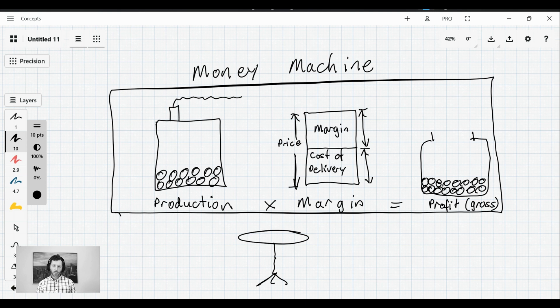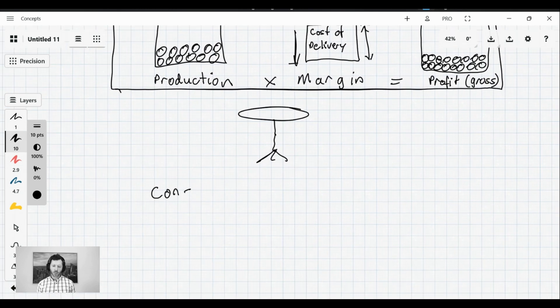Okay now that we can see we're going to be looking for the constraints or barriers that are stopping this machine from making more money and we're going to have constraints on the production side and on the margin side.